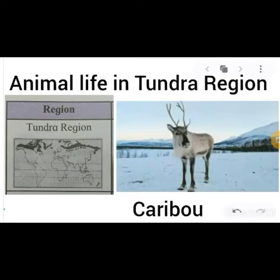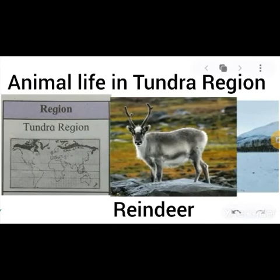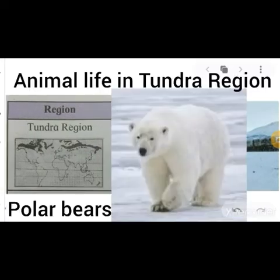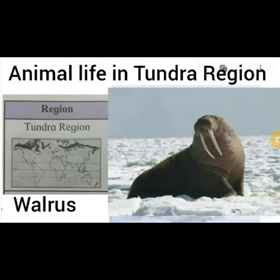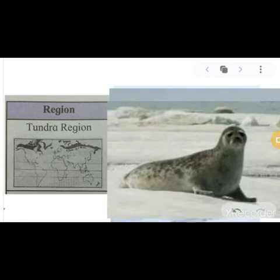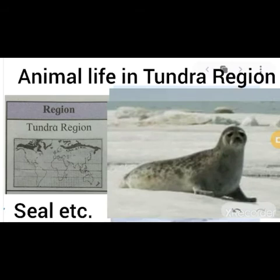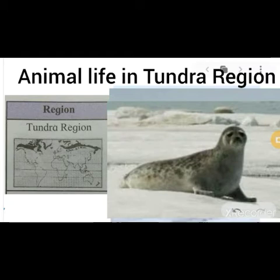Animal life in the tundra region includes caribou, reindeer, polar bear, fox, walrus, and fish. These animals have soft and thick fur. Such types of animal life are found in the tundra natural region.